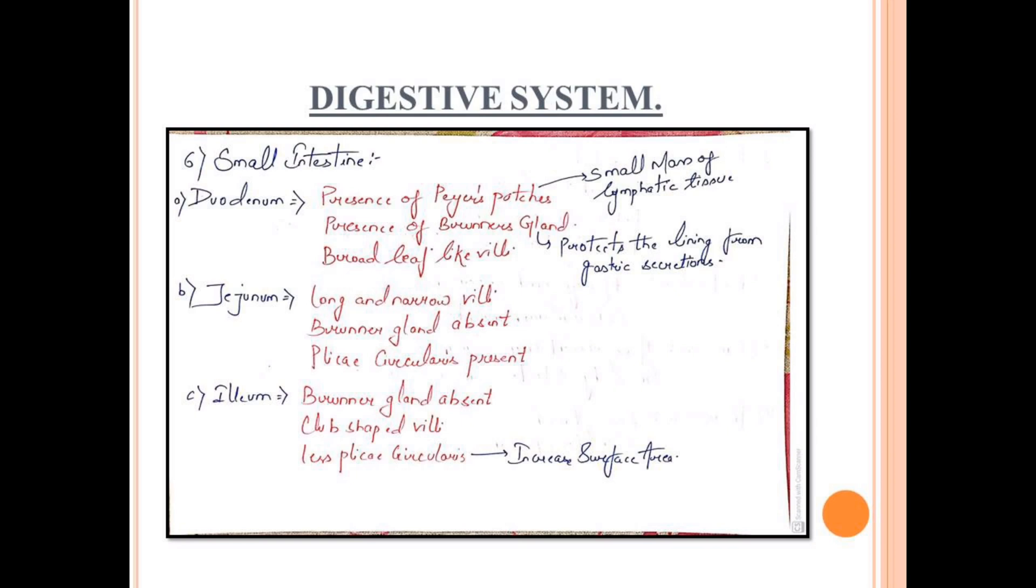Another characteristic is the presence of Brunner's glands. Brunner's glands function to protect the stomach lining and small intestine lining from the glandular secretions. Another characteristic is it has villi. What is important is the shape. It has broad leaf-like shape.